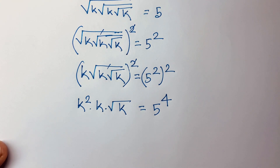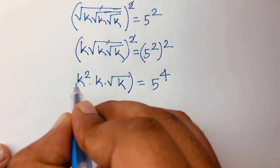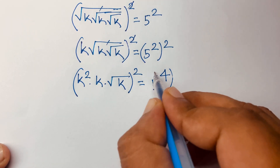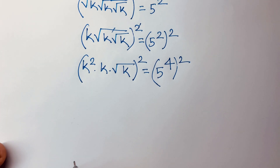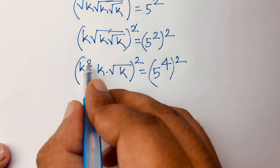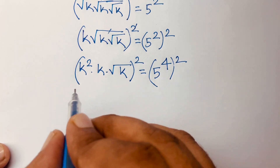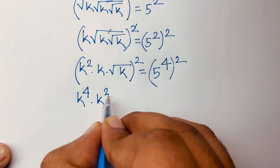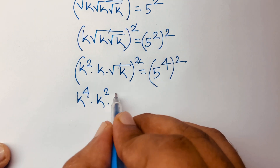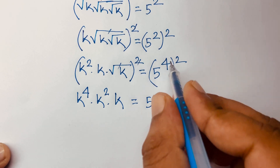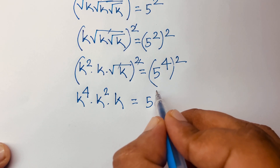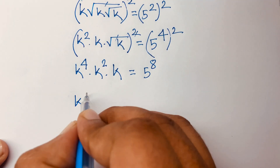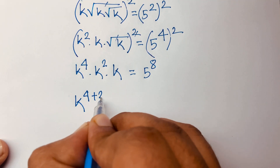Then I use both sides again whole squared. We move this square root — here is k squared, but this is squared so it will be k to the power 4, times k squared, times k (square root cancelled again). We find out k = 5 to the power of 2 times 4, which is 8. So here is k to the power 4 plus 2 plus 1.